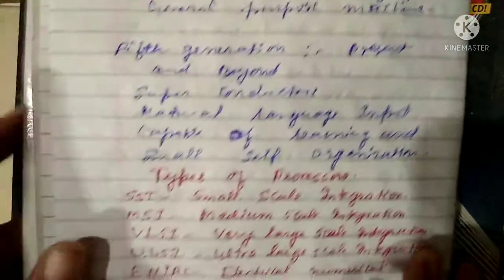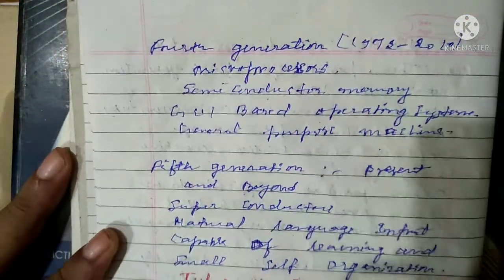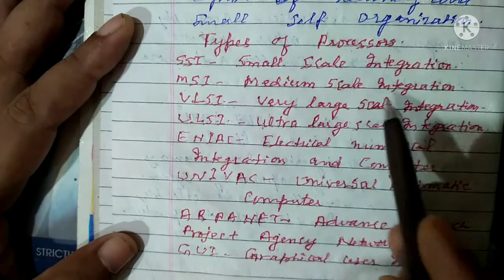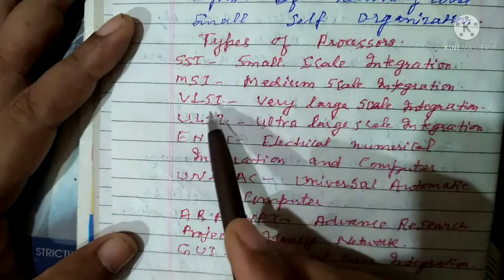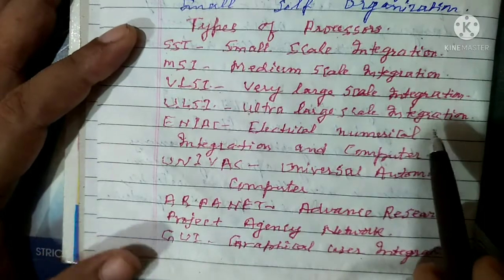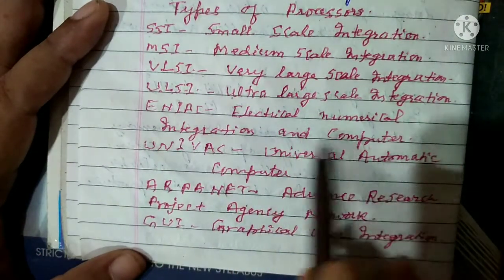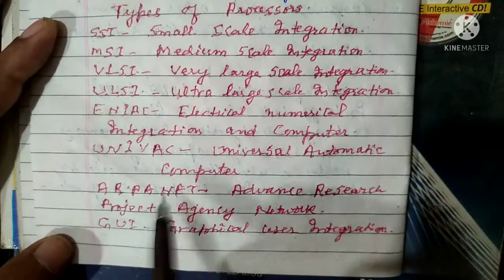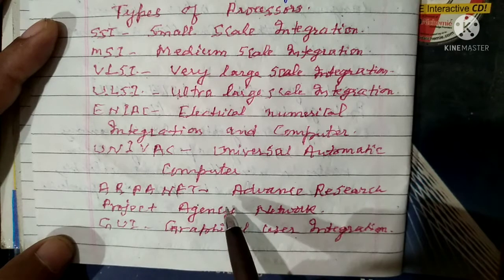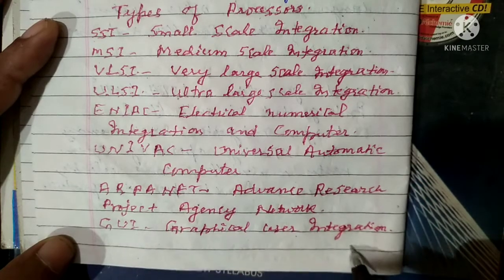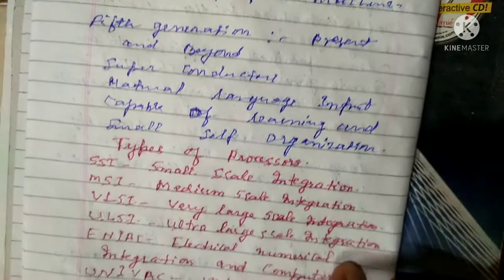Types of processors: SSI — Small Scale Integration; MSI — Medium Scale Integration; VLSI — Very Large Scale Integration; ULSI — Ultra Large Scale Integration. Important acronyms: ENIAC — Electrical Numerical Integration and Computer; UNIVAC — Universal Automatic Computer; ARPANET — Advanced Research Project Agency Network; GUI — Graphical User Interface. All these things are given in this chapter.